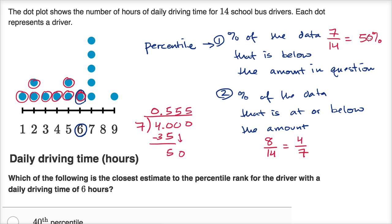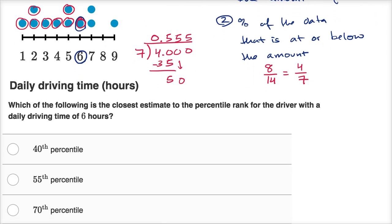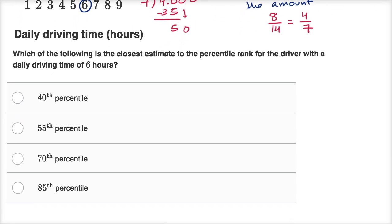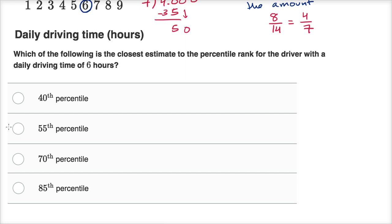So either of these would actually be a legitimate response to the percentile rank for the driver with a daily driving time of six hours. It depends on whether you include the six hours or not. So you could say either the 50th percentile or the roughly the 55th, well actually the 56th percentile if you wanted to round to the nearest percentile. Now if you look at these choices here, lucky for us there's only one choice that's reasonably close to either one of those, and that's the 55th percentile.